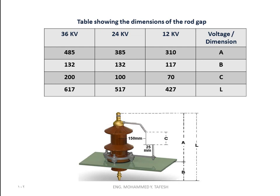This table shows us the dimensions and distances of the rod gap at this insulator. When our system is working on 24 kilovolts, you will find the dimension C is 100 millimeters. The dimension L — the full distance between the two terminals — is 517 millimeters. And the distance B between the surface of the transformer and the deep terminal in the oil in the transformer is 132 millimeters.